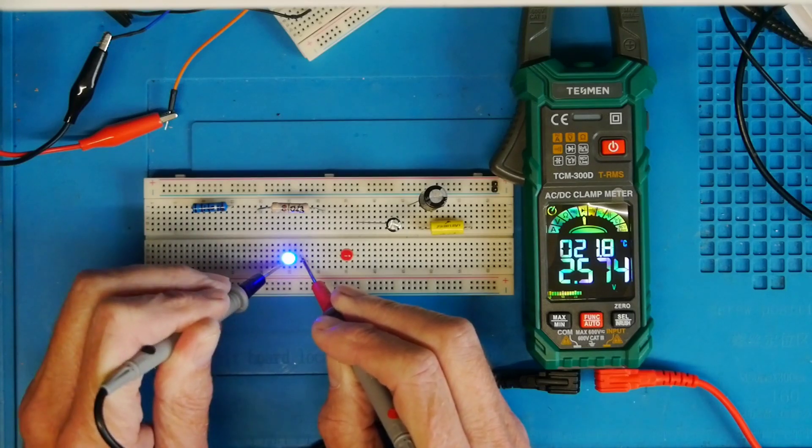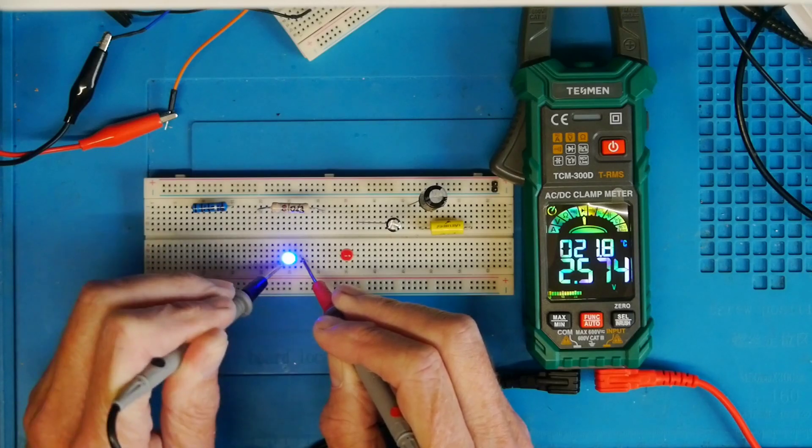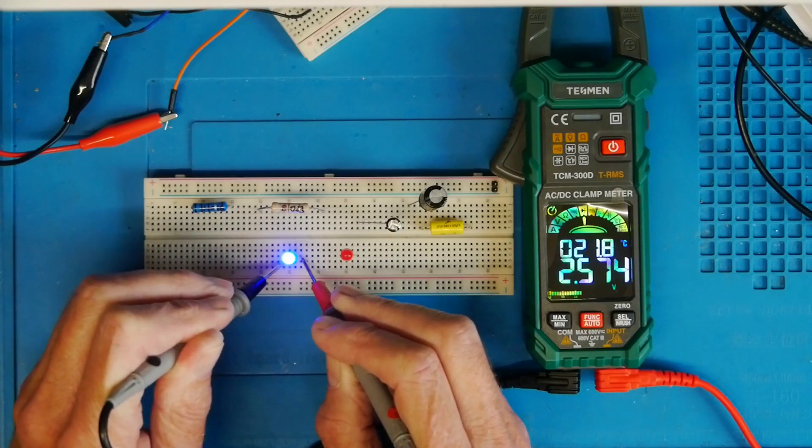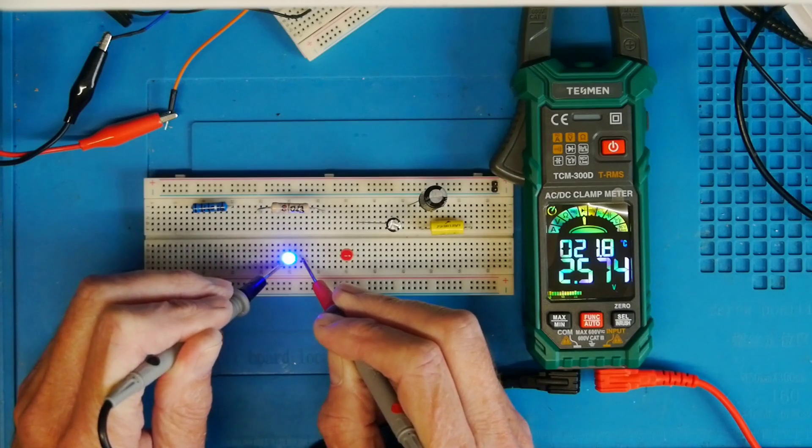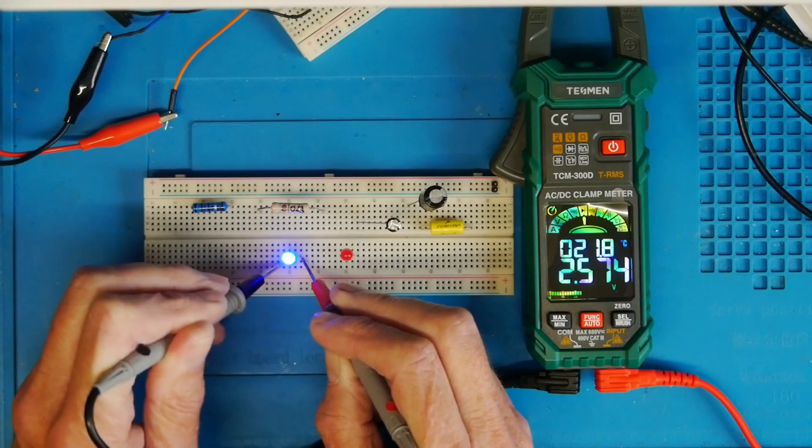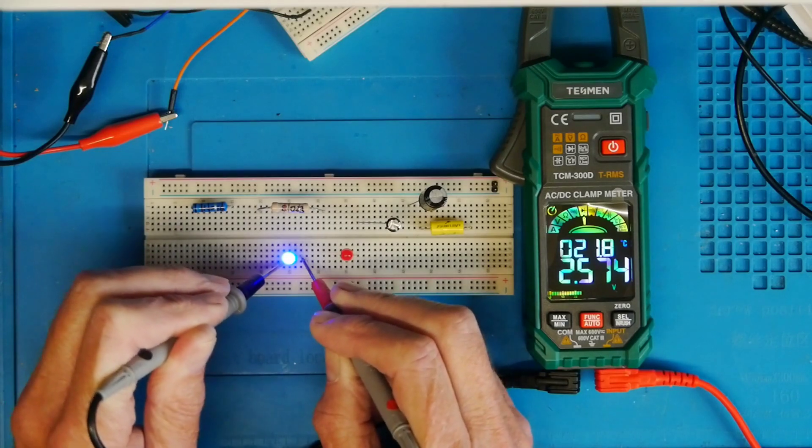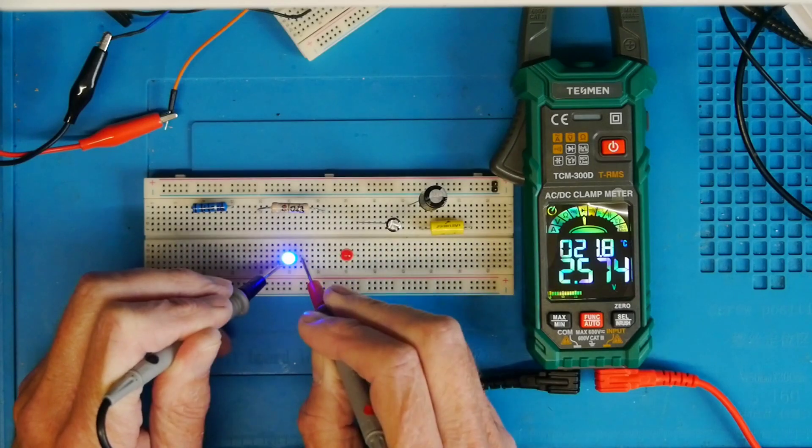Next I'm going to look at current. I'm going to look briefly at DC current using the clamp, but then AC current. To do that, I'm going to need to relocate into the workshop so I can take some current measurements using some of my machines and look at the inrush current facility that this meter has.